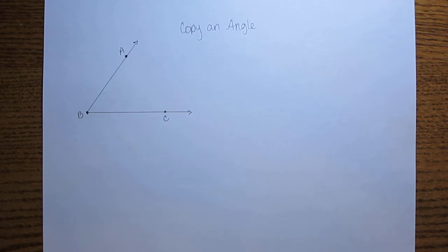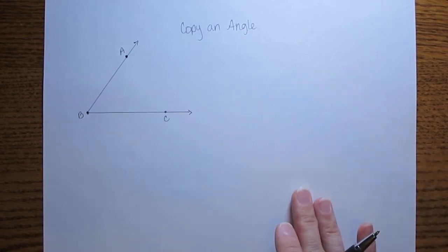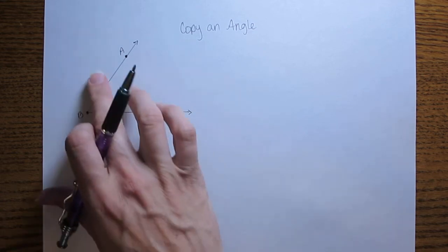You may have been told to construct or use your protractor to draw an angle that had a certain measure, but you are starting with an original angle and you are going to copy another angle without using your protractor. Copy another angle that is the same measure.